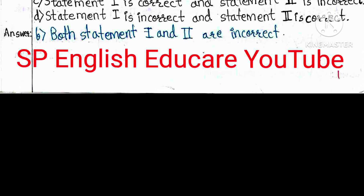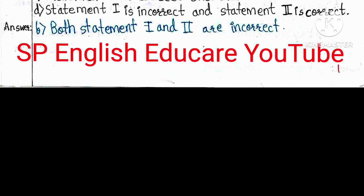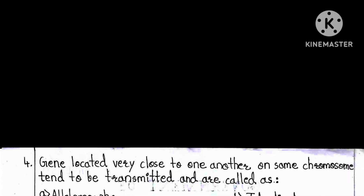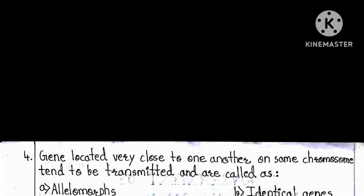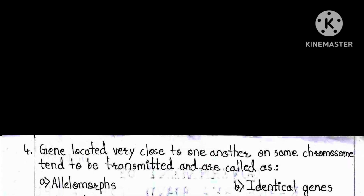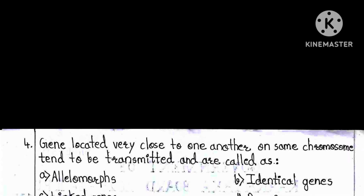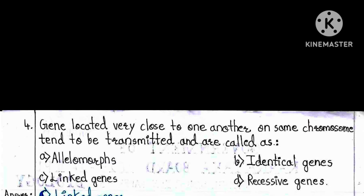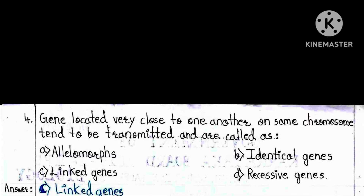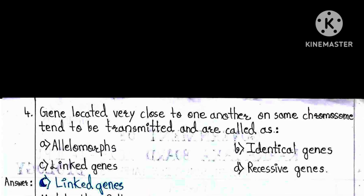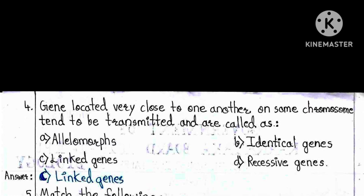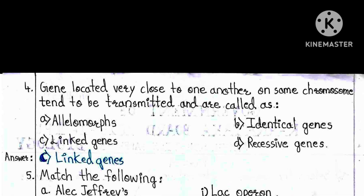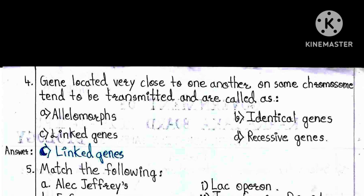Question 4: Genes located very close to one another on the same chromosome tend to be transmitted together and are called: A) Allelomorphous, B) Identical genes, C) Linked genes, D) Recessive genes. The answer is C — linked genes.